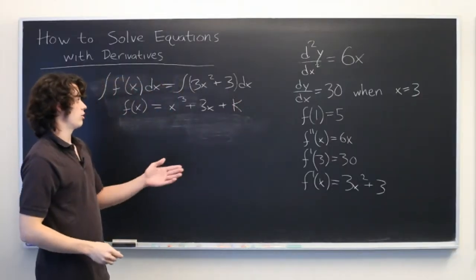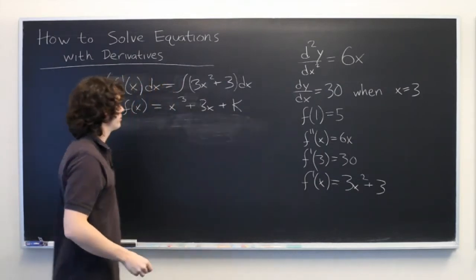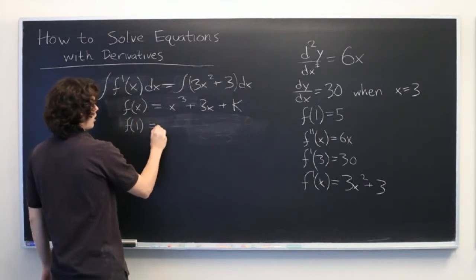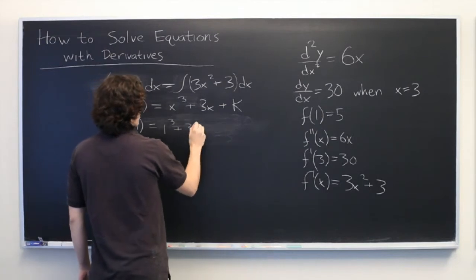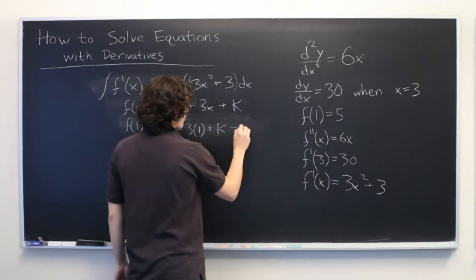But again, we have enough information to determine what k is. Since we know that f of 1 equals 5. So, we'll plug that in. f of 1 equals 1 cubed plus 3 times 1 plus k, which we know is equal to 5.